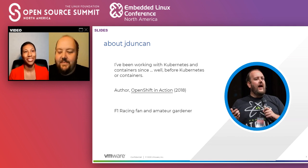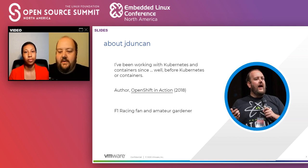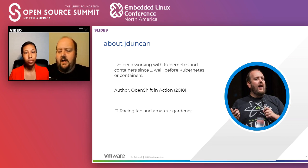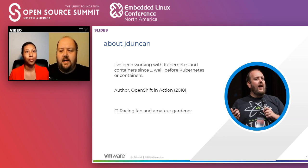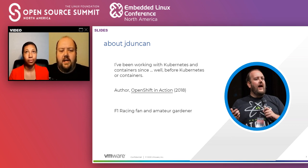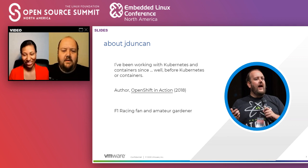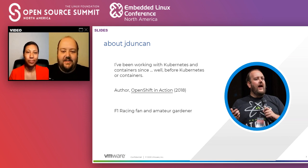A little bit about me: I'm one of the staff architects at VMware on the Kubernetes team, coming out of the Heptio acquisition and the open source initiatives going on inside VMware. I've been working with Kubernetes since before it was called Kubernetes, and containers since before they were called containers - that's the nicest way I could come up with of calling myself old. Rachel is a patented inventor, which is amazing. Probably the coolest thing I've done is write a book on OpenShift, which came out in 2018. In my spare time I'm a big F1 racing fan, which Rachel doesn't get, and a rabid amateur gardener - our backyard is full of things that don't often grow.